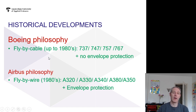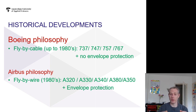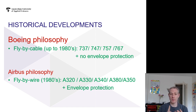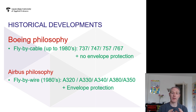Boeing's philosophy up to about 1980 was fly-by-cable: all control surfaces were controlled by cables attached to the flight controls of the pilot, and there was no flight envelope protection. Flight envelope protection means that the aircraft is ensured to be in its safe flight envelope — speeds shouldn't get too low or too high, and configurations like flaps or bank angle are protected so that the aircraft remains in a safe state of flight.